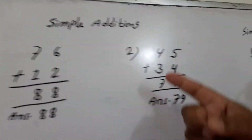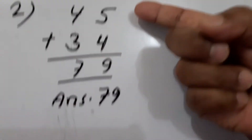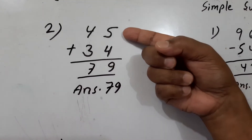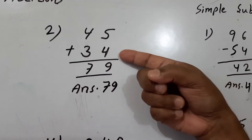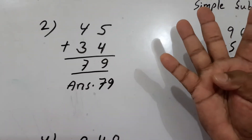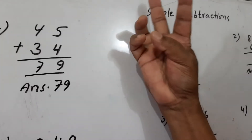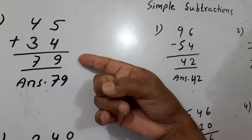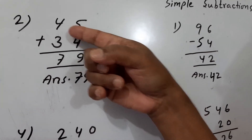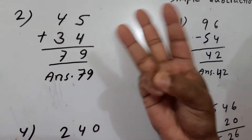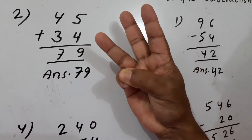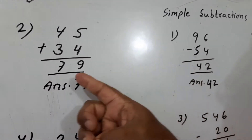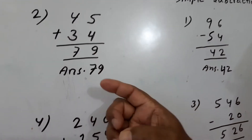Now see number 2. This is 45, this is 34. This is 5 and this is 4. Take 4 in hand: 5, 6, 7, 8, 9. This is 9. And this is 4, take 3 in hand, then: 4, 5, 6, 7. This is 7. Answer is 79.